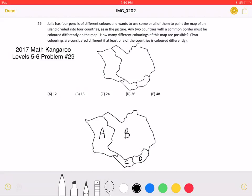Let's name the countries on the map A, B, C, D. We have four colors. There are four possible colors to use for A.